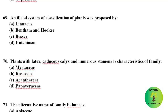Artificial system of classification of plants was proposed by Carolus Linnaeus. It is a system of classification in which one or very few morphological characters are considered as key features. Linnaeus is also called the father of taxonomy, and he gave the artificial system of classification in his Species Plantarum in 1753.